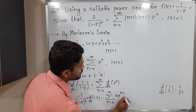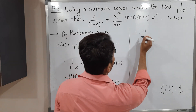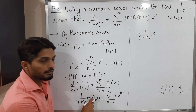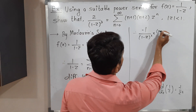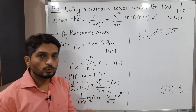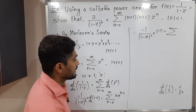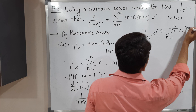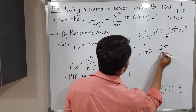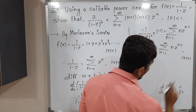The derivative of zⁿ is n·z^(n-1). On the left side, using the formula that the derivative of 1/z is -1/z², applying chain rule to 1/(1-z) gives -1/(1-z)² times the derivative of (1-z), which is -1. So the two negatives cancel, giving us 1/(1-z)² = Σ(n=1 to ∞) n·z^(n-1), with condition |z| < 1. (Note: n=0 contributes zero so we start from n=1.)